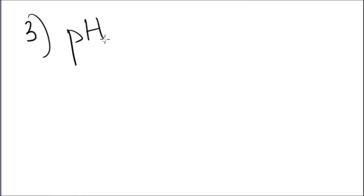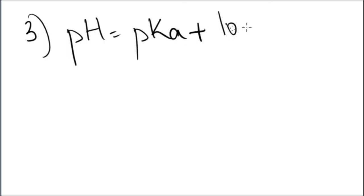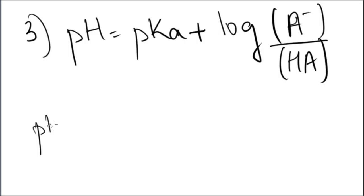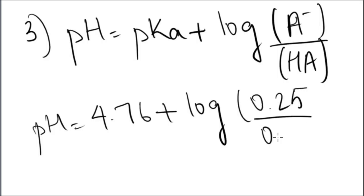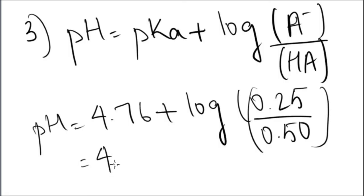The third question was a calculation. You had to find the pH when you were given the pKa and the concentrations of the acid and the conjugate. So we used the Henderson-Hasselbalch equation for the acid. We know pKa is 4.76 plus log. The conjugate is 0.25, which is ethanoate — sodium ethanoate — and the acid was 0.5, which was ethanoic acid. So you get an answer of 4.46.